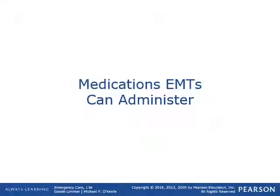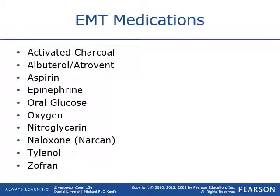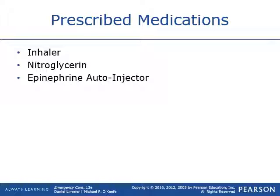Now let's talk about medications EMTs can actually give in the field. We'll cover medications that EMTs in West Virginia are able to administer: activated charcoal (optional, being phased out), albuterol and atrovent, aspirin, epinephrine via direct intramuscular injection or EpiPens, oral glucose, oxygen, nitroglycerin, Narcan, Tylenol, and Zofran. EMTs can also assist in administering the patient's own inhaler, helping them give their own nitroglycerin, and assisting with the epi auto-injector. Not every state allows EMTs to give such an array of medications as West Virginia does.